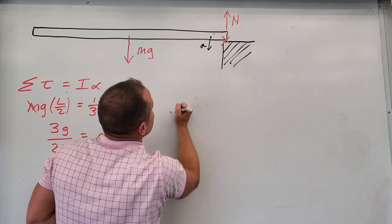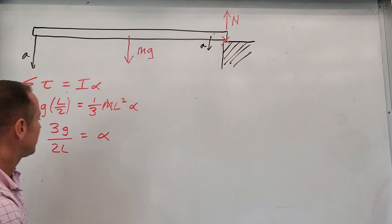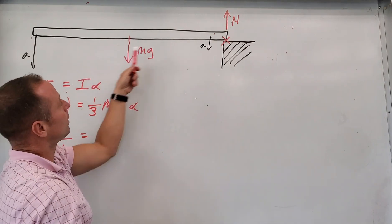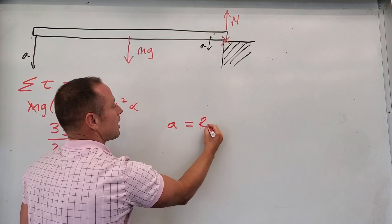What will happen is a point here is not going to accelerate down nearly as fast as a point that's on the outer edge, and so what you can do is find the rate of acceleration of different points on the stick using a equals r alpha.